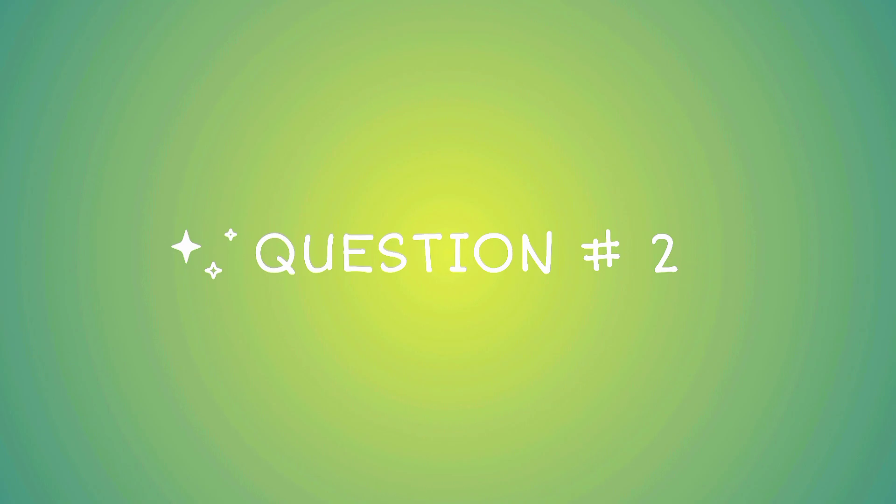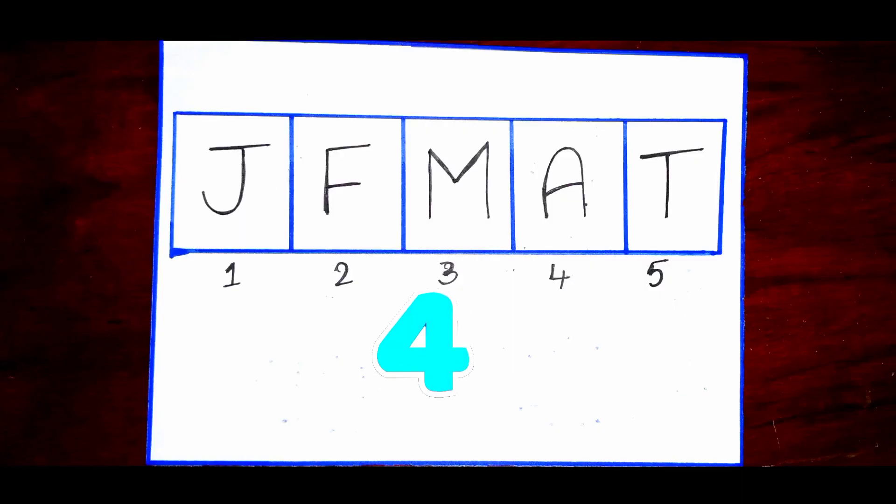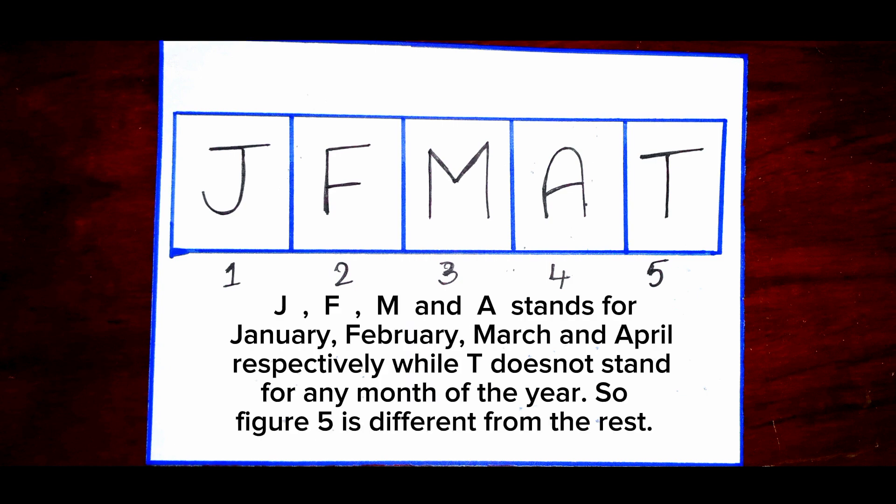Question number two. J, F, M, and A stand for January, February, March, and April respectively, while T does not stand for any month of the year. So figure five is different from the rest.